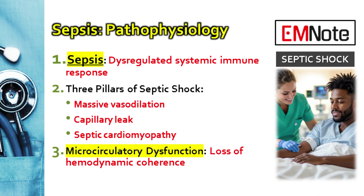Sepsis is basically the systemic firestorm — the body's own response going haywire — and that response leads to circulatory collapse. Before we grab fluids or drugs, we need to know why the circulation is failing. First, there's massive vasodilation. Think nitric oxide causing profound relaxation everywhere — arteries, veins. It's distributive shock, like the container is suddenly way too big for the volume inside.